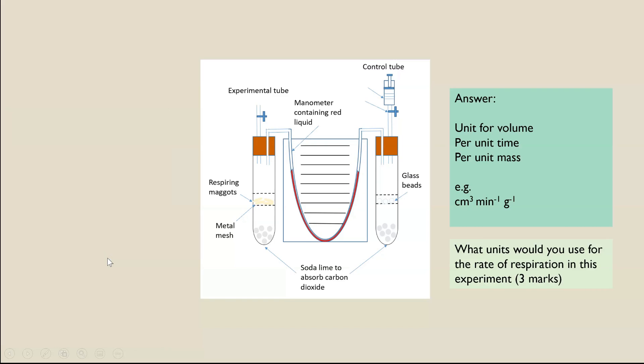So the units - three parts - is always a unit for volume per unit time per unit mass. So I've used this as an example, but it could equally be millimeters cubed. Most likely it is per minute for this, because if it was per second, seconds isn't really long enough to see a change. And per grams is the most common, because whatever you do put in the experimental tube has to be small enough to fit in a tube, so you're going to be measuring it in grams.